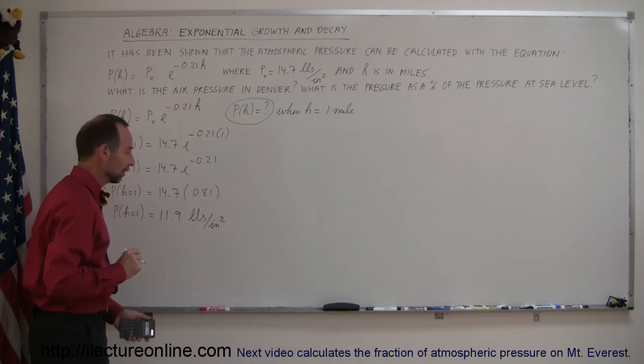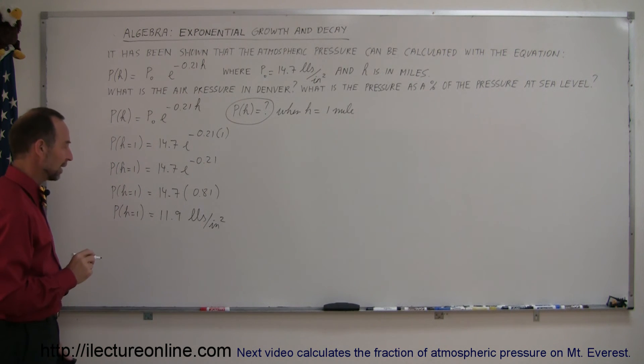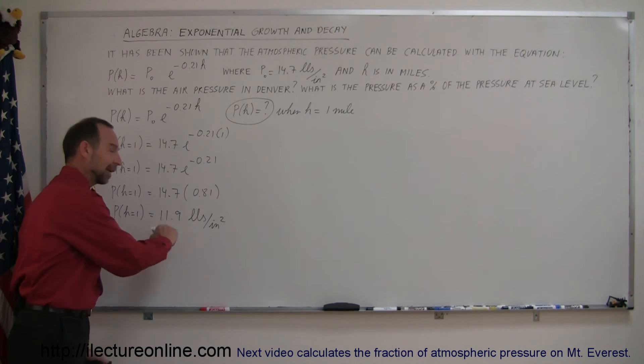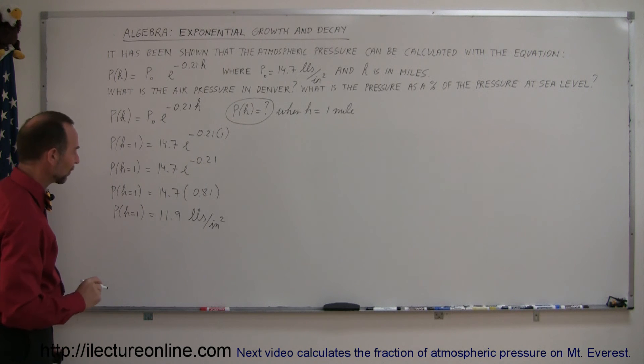So the air pressure in Denver is 11.9 pounds per square inch. That's why when the football teams go to Denver to play the Denver Broncos they have to deal with that. That's what we call home court or home field advantage.